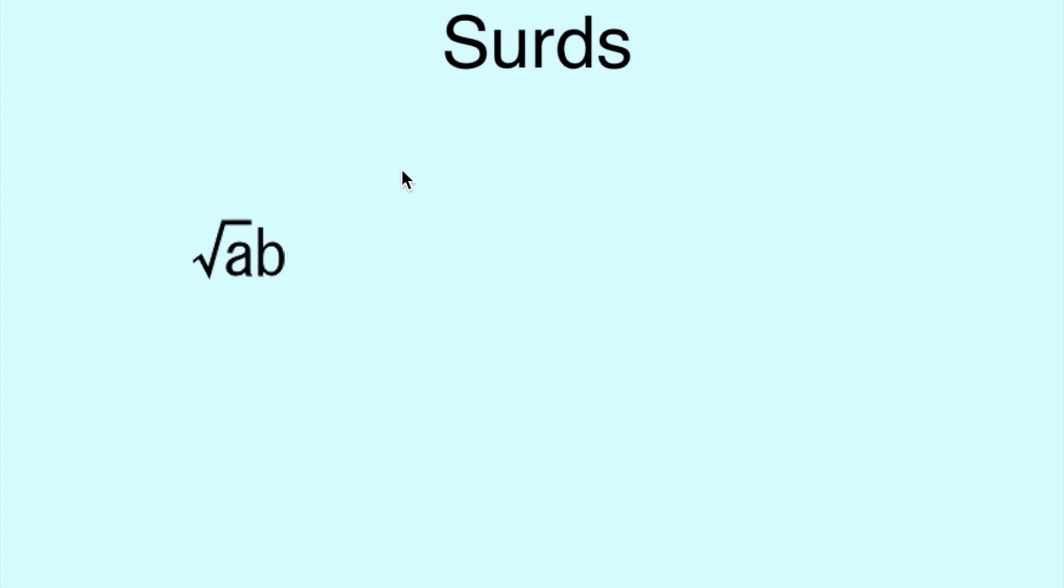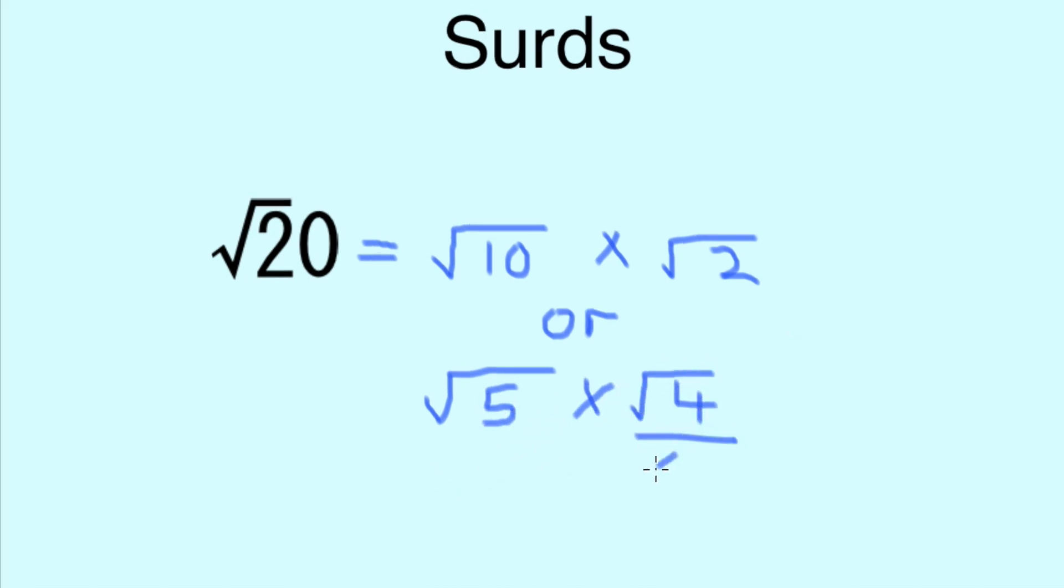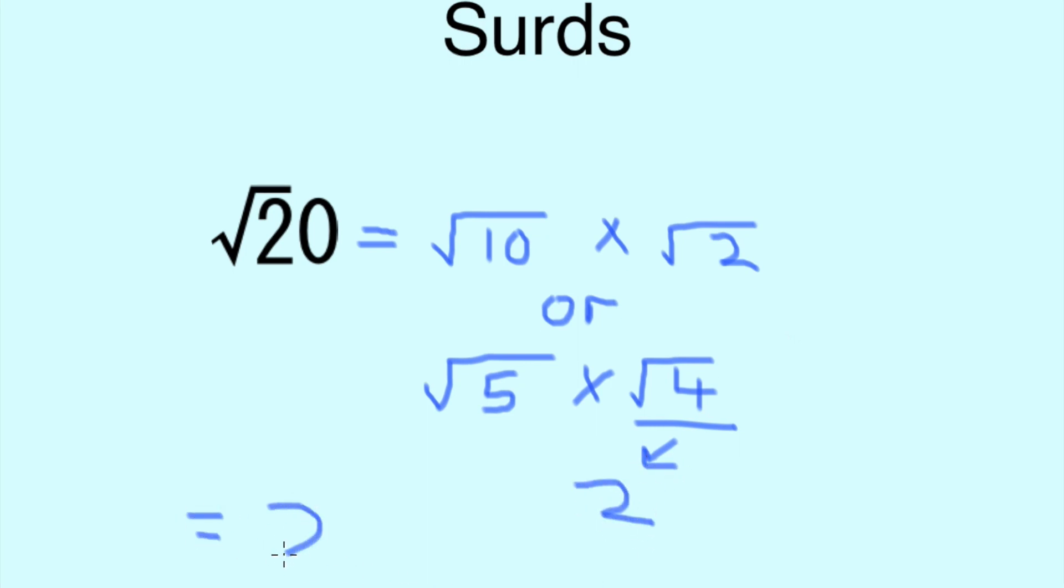There are many different rules to remember when working with surds. The first one is that the square root of AB is the same as the square root of A times the square root of B. For example, the square root of 20 can be either the square root of 10 times the square root of 2, or the square root of 5 times the square root of 4. We want to use the square root of 5 times the square root of 4 because we know the square root of 4 is 2, so we can write the expression 2√5.